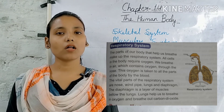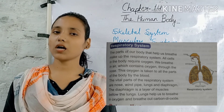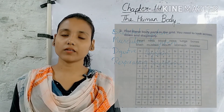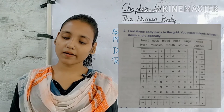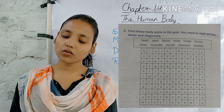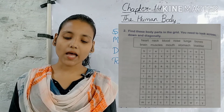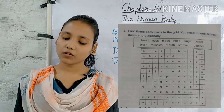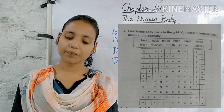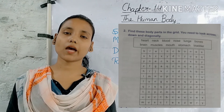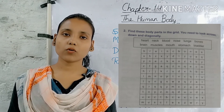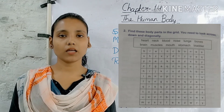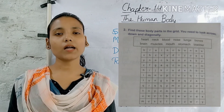Students, that's all for today. Now it's time to do the homework. Open your book and see page number 112. Find these body parts in the grid. You need to look across, down and diagonally. इस box में जितने भी words दिये हैं जैसे की heart, neck, blood, nose, lungs, bones, brain, muscles, mouth, stomach and bladder — bachcho आपको इन सारे words को इस grid में search करना है और mark करना है। Clear? This is your homework. That's all for today. Thank you.